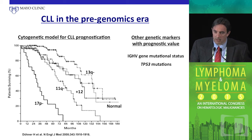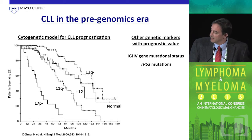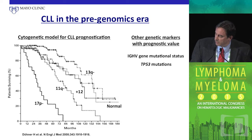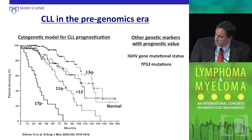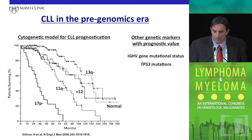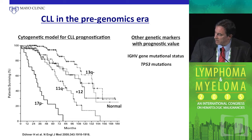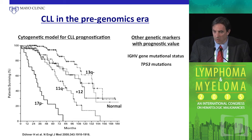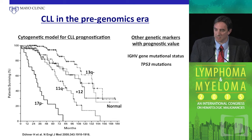I'd like to call this the pre-genomic era. This is still the gold standard and is very important in risk assessment. It's based, as many of you know, on the last 15 years of work from the German group, based on the status of four different regions identified by FISH. We also know how important the IGVH status is, as well as P53.